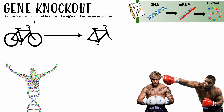Gene knockout is essentially when we render a gene unusable to see its effect on an organism. A great analogy is a bicycle. If you wanted to figure out what each part does without asking someone, you can remove that part and see what the outcome is. Take the wheels — if you didn't know what they do, remove them and try to ride. You'd discover you can't go. Same with every other part: remove the seat and it's uncomfortable. By removing each part, you can figure out its function.